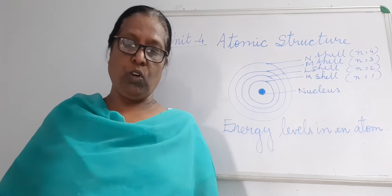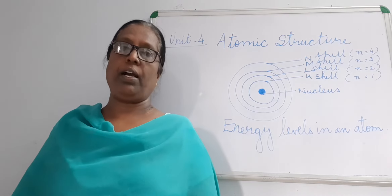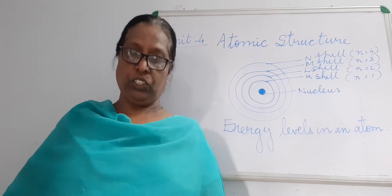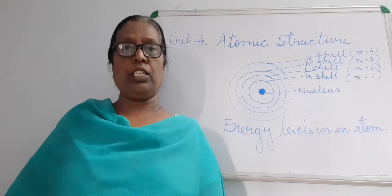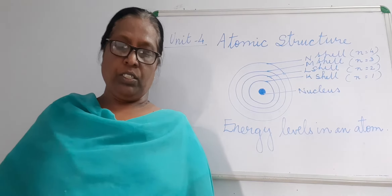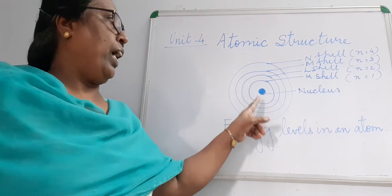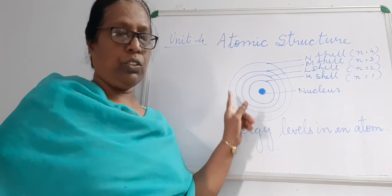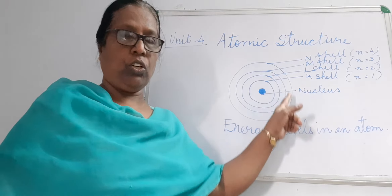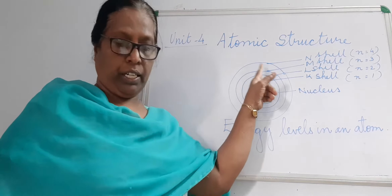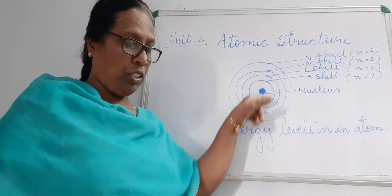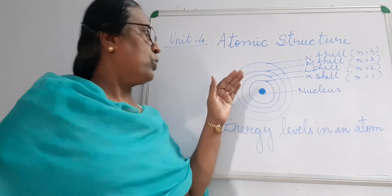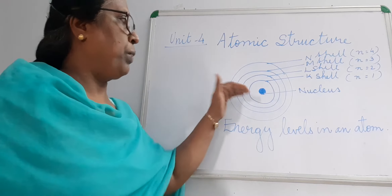First point: electrons revolve around the nucleus in circular paths called orbits. The other name of orbits are shells or stationary states. An atom has a nucleus, and around the nucleus electrons revolve in a circular path. These paths are called orbits, and different orbits are there.